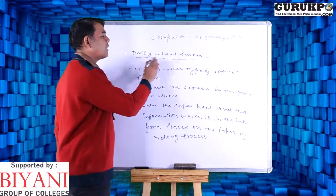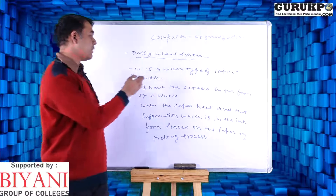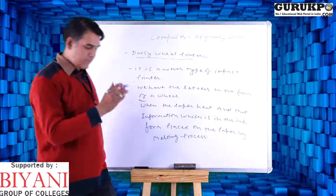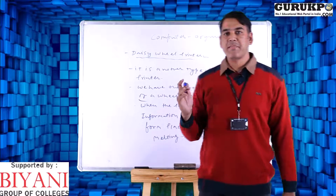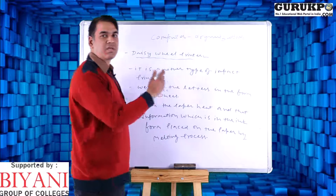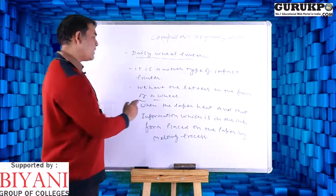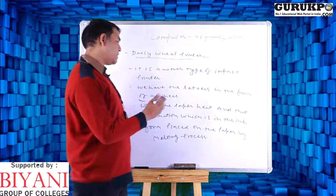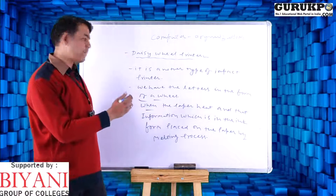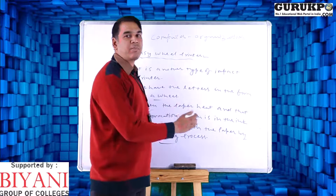Let us have another discussion about the daisy wheel printer. It is another kind of printer in which the printing is done on a particular wheel. On the wheel there are separated particular chunks, and every character in a particular chunk decides what kind of printing should appear for that character. When the paper is heated and the ink is placed on the particular paper, the ink melts and the printing is impacted on the particular paper.